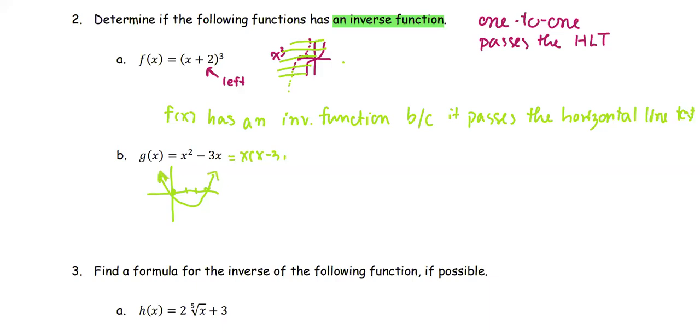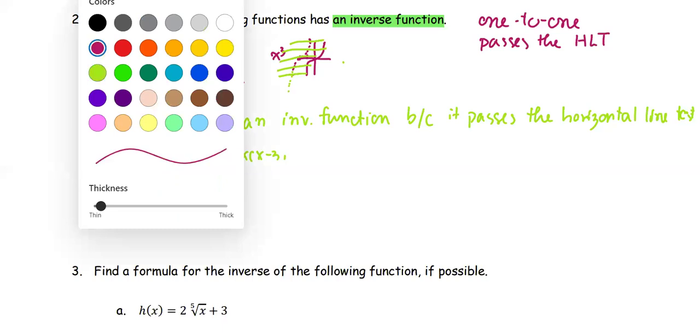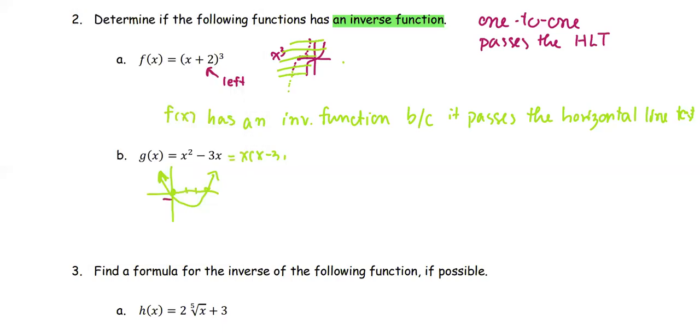And when we use the horizontal line test, that means we're going to draw the horizontal lines. At least one line that has two intersection points. That means this function graph does not pass the horizontal line test.